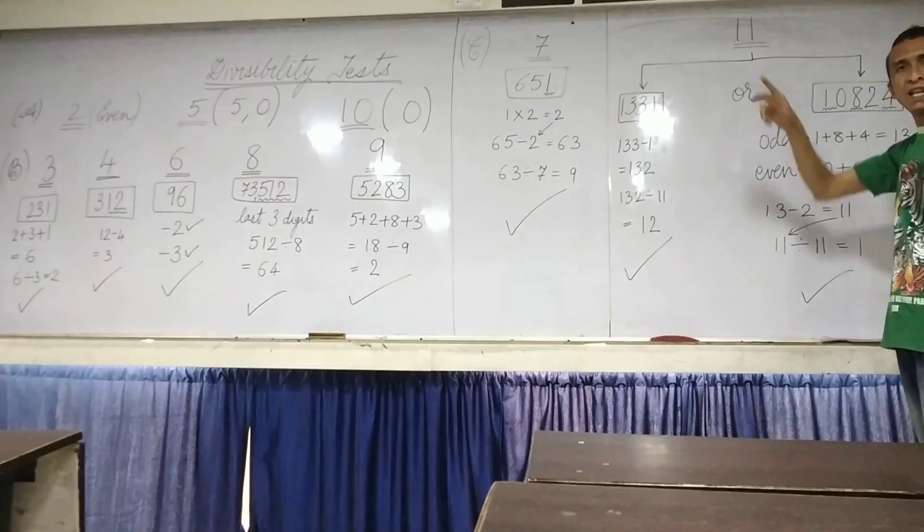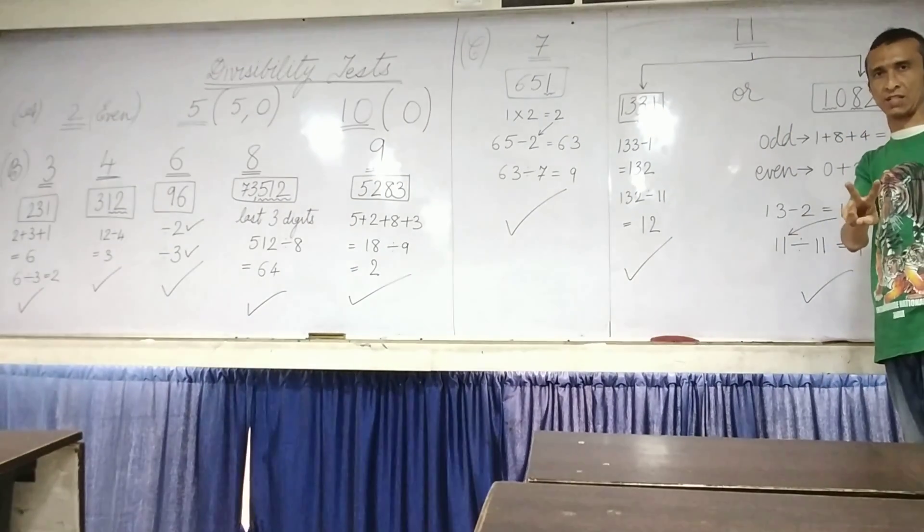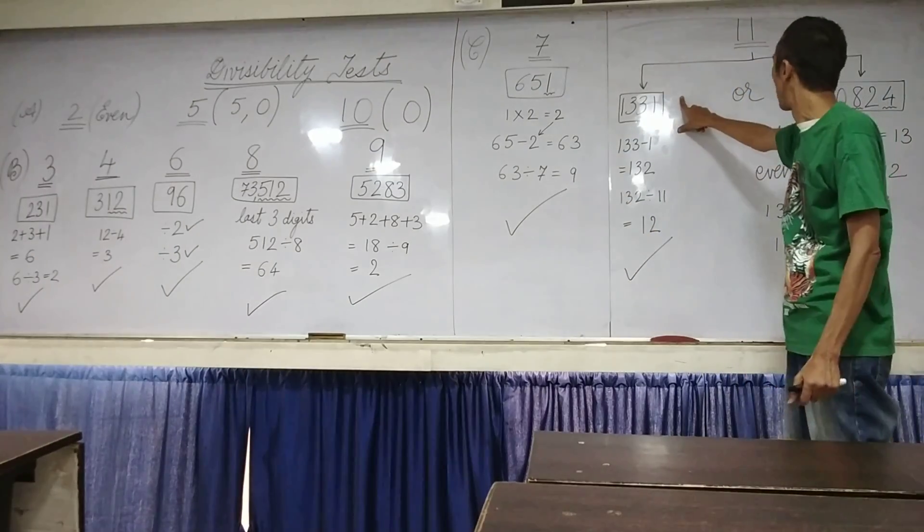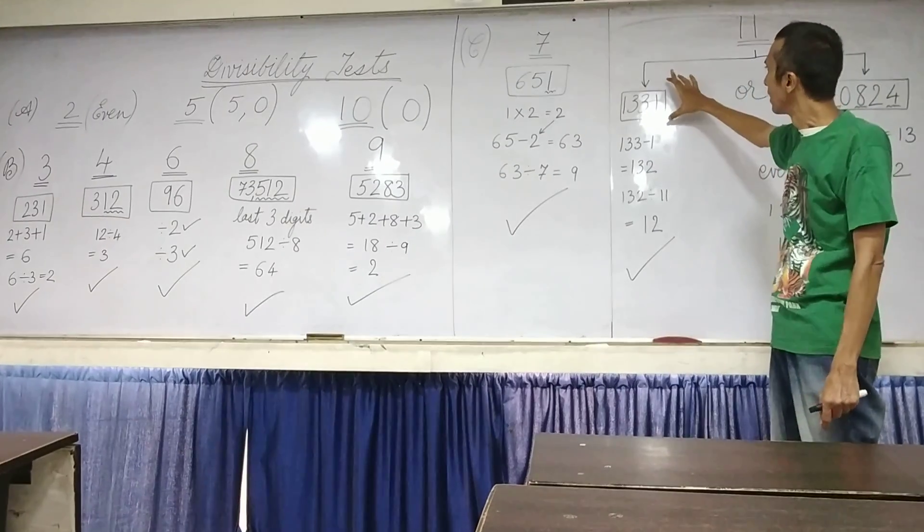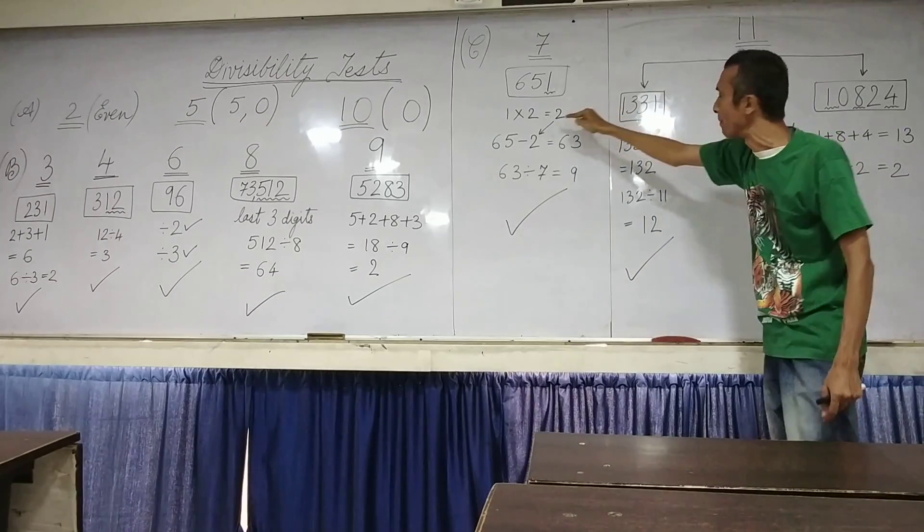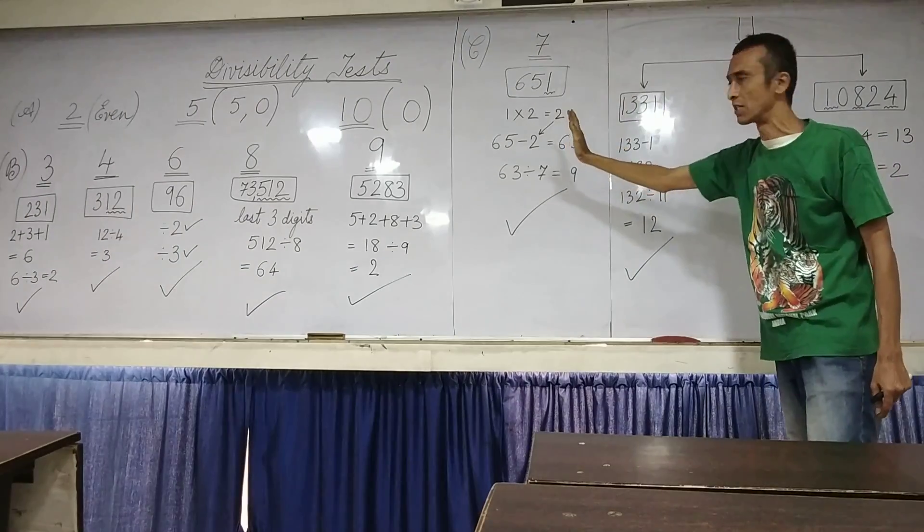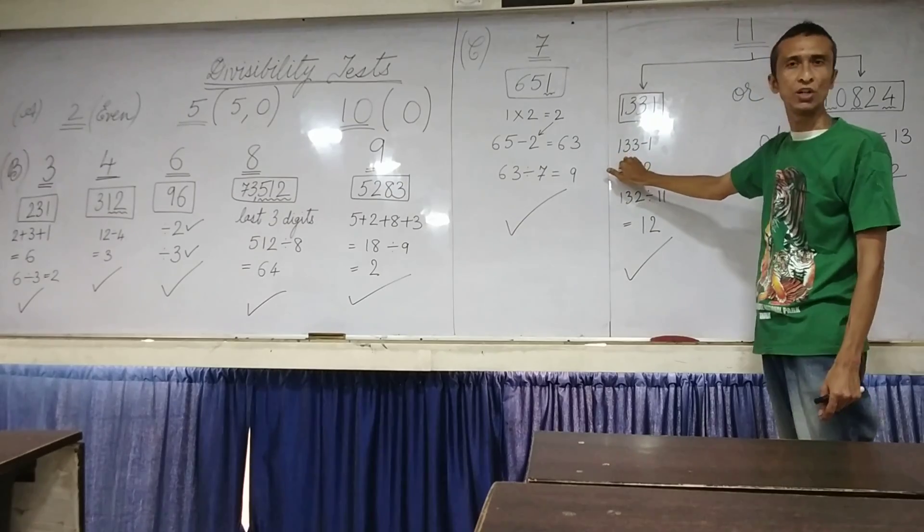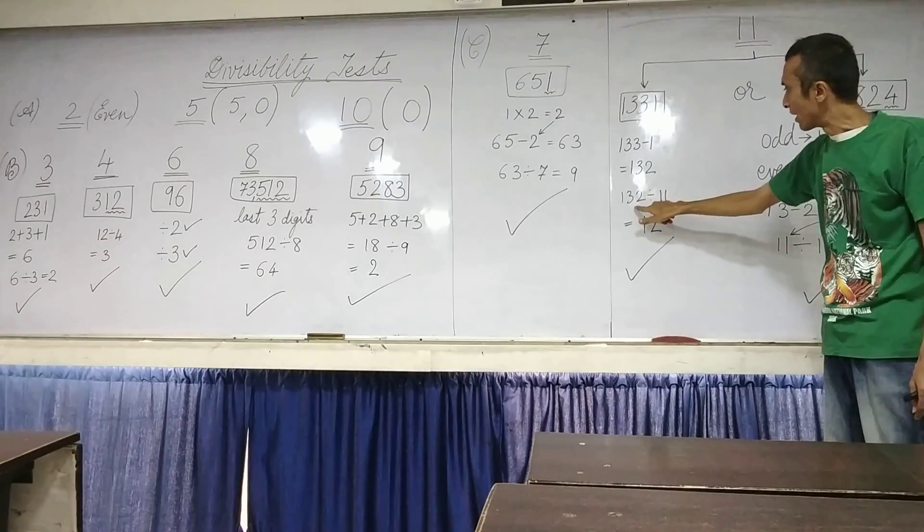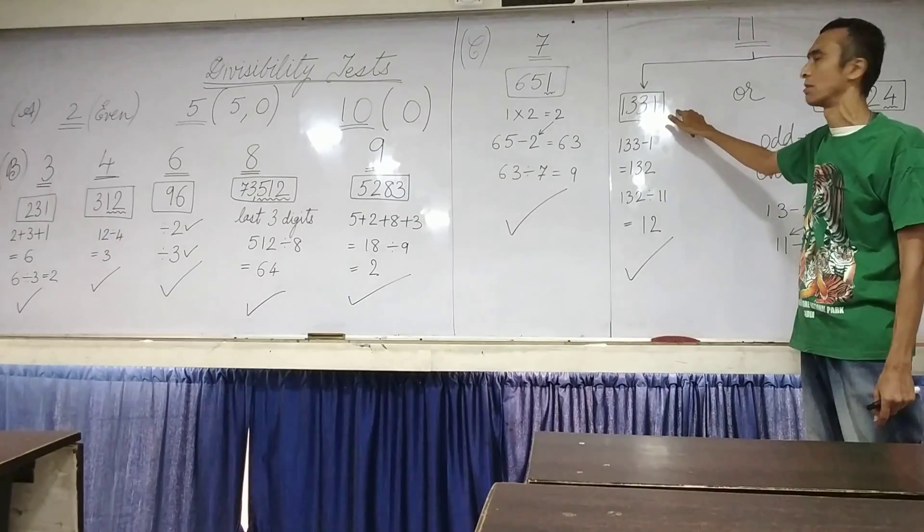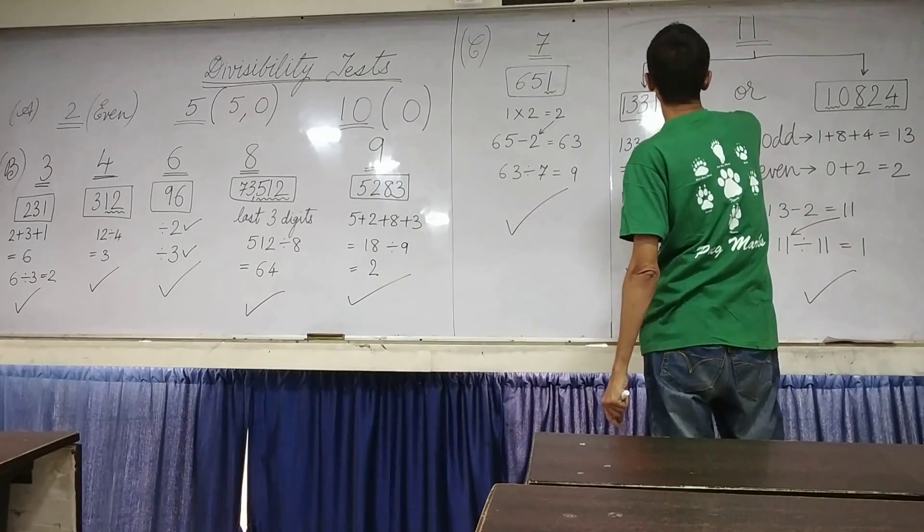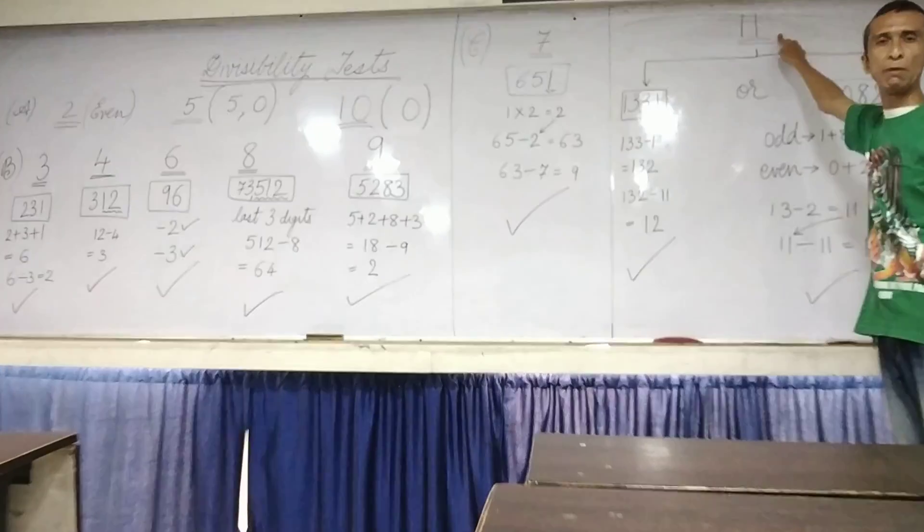Next is 11. 11, I got 2 divisibility tests by which you can ascertain whether the number is divisible by 11 or not. The first one goes this way. I have taken two different examples. You take the last digit and subtract that last digit from the remaining number that is formed of the remaining digits. So in this case, you get 133 minus 1. You get 132. Is it divisible by 11? In this case, of course it is. So you get 12. So 1331 is divisible by 11.